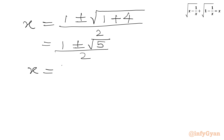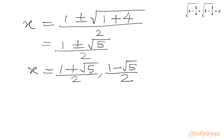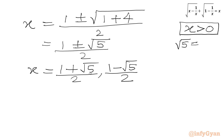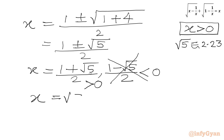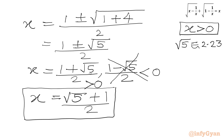So x equals (1 plus root 5) over 2, or (1 minus root 5) over 2. Since x must be greater than 0 for real solutions, and root 5 is approximately 2.23, the second solution (1 minus root 5) over 2 is negative and must be rejected. Our accepted solution is x equals (root 5 plus 1) over 2 — the golden ratio! I hope you liked this video. Thank you so much for watching, and don't forget to subscribe.